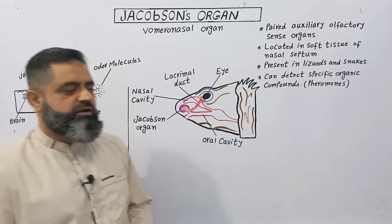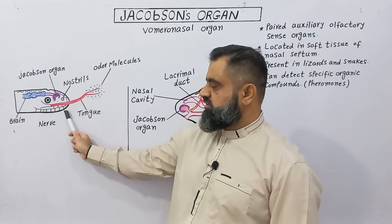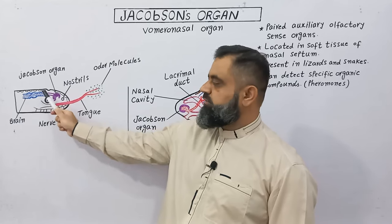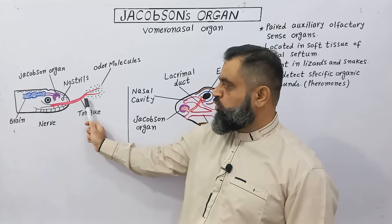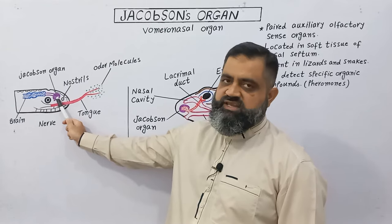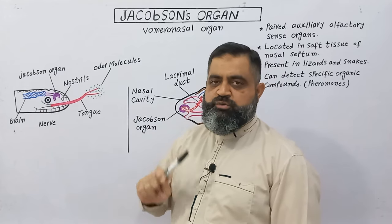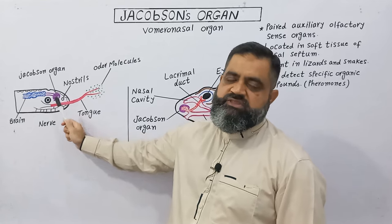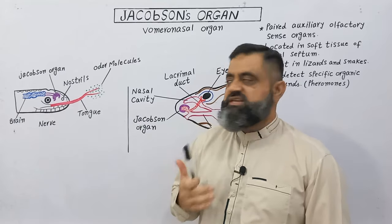If we look at the diagram of a snake, in the head region of the snake, you can see the eye, on the upper side there is a brain, and this is the oral cavity which contains a long protruding tongue. Just above the oral cavity there is a nasal cavity which opens outside through nostrils. Jacobson organs are located in the nasal cavity. These are in the form of pear shape, sea shape, mushroom shape, or crescent shape.